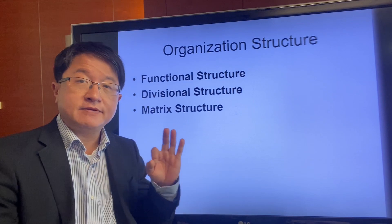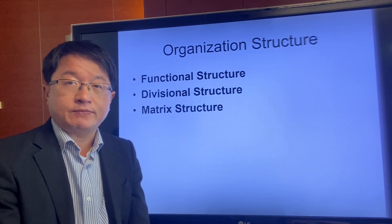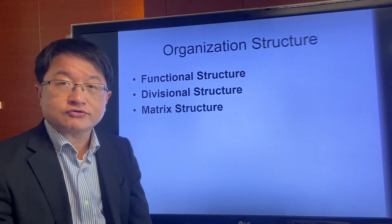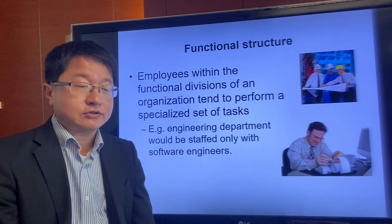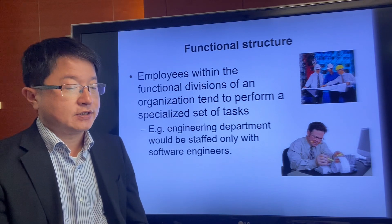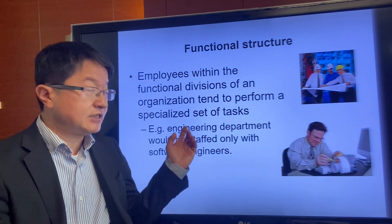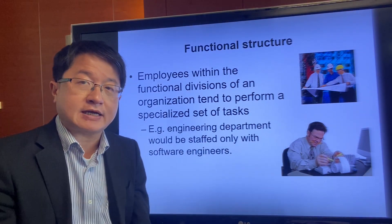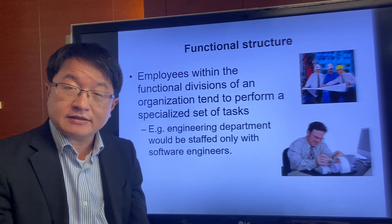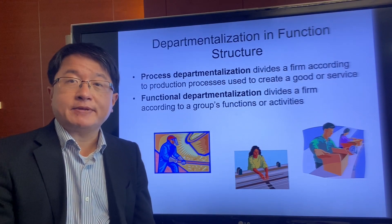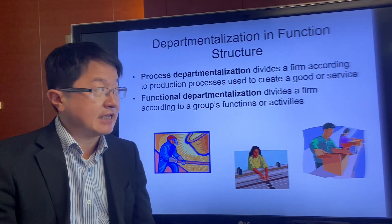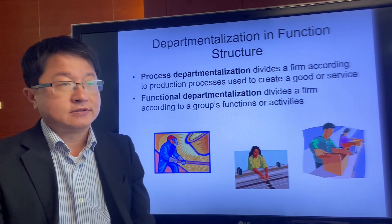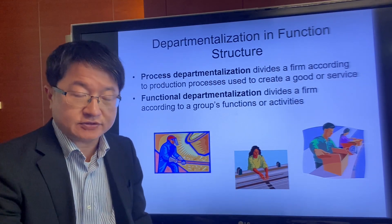There are three major structures to understand in this course: functional structures, divisional structures, and matrix structures. For the functional structure, we group employees with the same functions together in one department. For example, all engineers go in the engineering department, and accountants and auditors sit together in the accounting unit. The company can be departmentalized by different functions and processes, such as engineering, packaging, printing, or auditing.